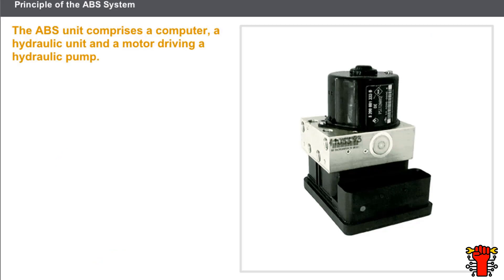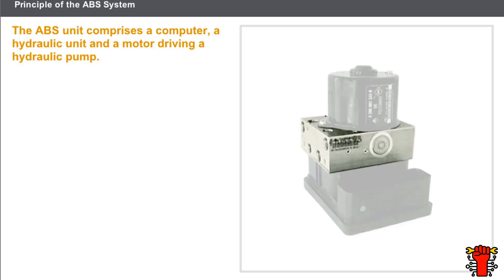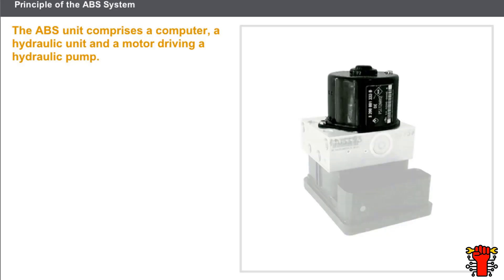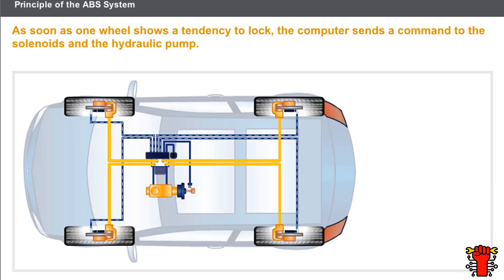The ABS unit comprises the following elements: a computer, a hydraulic unit, and a motor driving a hydraulic pump. The computer receives information from each wheel sensor. As soon as one wheel shows a tendency to lock, the computer sends a command to the solenoids and the hydraulic pump. The computer also receives information from the brake pedal and informs the driver of a problem via a warning light on the instrument panel.